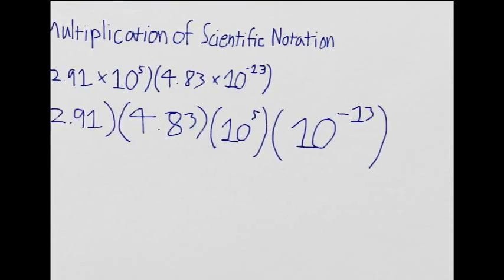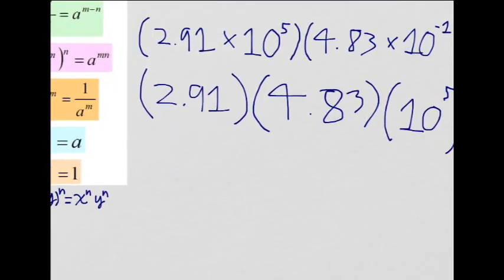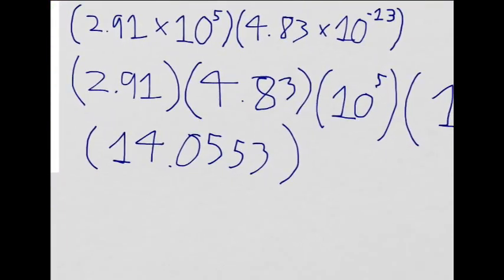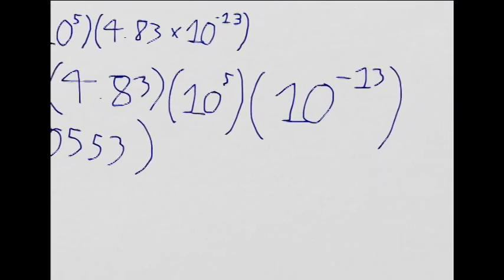Next thing you do is multiply these two numbers together. When I multiply them together, I get 14.0553. Let's keep that number for now, then we'll round it to a smaller number later.